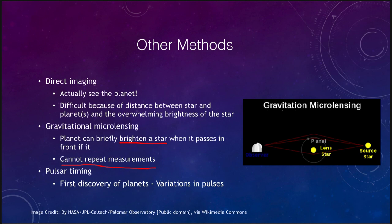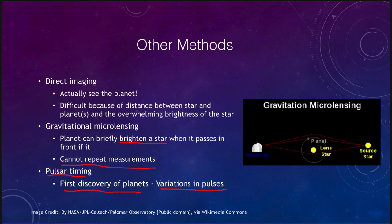Pulsar timing was our very first discovery of planets outside our solar system, based on variations in the pulses of a pulsar. It was actually quite surprising because we wouldn't have expected a planetary system to exist around a pulsar — a pulsar is the remnant left over when a supernova occurs. We would think a supernova would be powerful enough to have destroyed all material around it and any planets would be long gone. But perhaps some material recondensed and new planets formed afterward, because these were very definitely found and were the first detections of extrasolar planets.